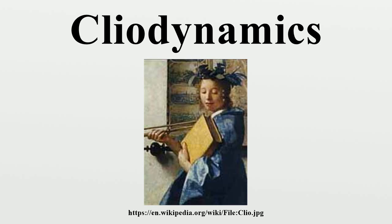Korotayev A., Malkov A., and Khaltourina D. 2006 B, Introduction to Social Macrodynamics: Secular Cycles and Millennial Trends, Moscow, URSS, ISBN 5-484-00559-0. Korotayev and Khaltourina D. 2006, Introduction to Social Macrodynamics: Secular Cycles and Millennial Trends in Africa, Moscow, URSS, ISBN 5-484-00560-4.